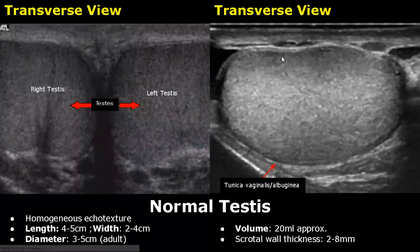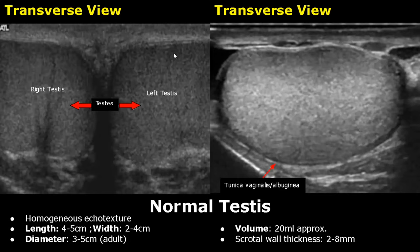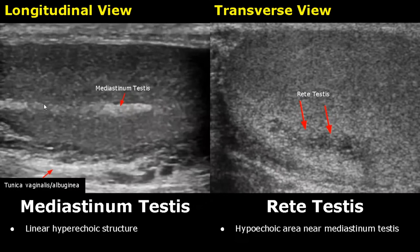In this transverse view we can see both the testes — here is the right testes and here is the left testes. The mediastinum testis is seen as a linear hypoechoic structure in the testes. The rete testis is not easily visualized but appears hypoechoic and is located near the mediastinum testis.